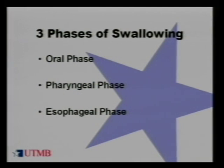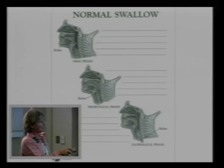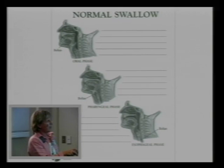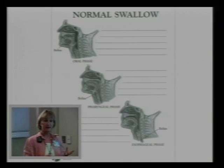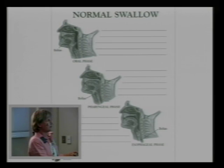In the oral phase, the food — we often refer to it as the bolus — is placed in the mouth. The bolus could be a liquid or a solid. The lips have to close to keep it in, then the muscles of the jaw and tongue move it around. The salivary glands moisten the food so it can be properly chewed. After chewing, the tongue forms the bolus into a ball and moves it toward the back of the throat, which is the end of the oral stage.